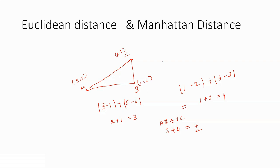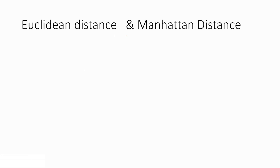So we use Manhattan distance when we cannot find a straight-line distance between two points. After understanding both distance measures, we should be clear on when to use Euclidean distance and when to use Manhattan distance. If we can find the distance between two points X and Y straight away, we use Euclidean distance.